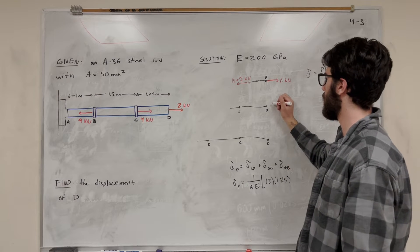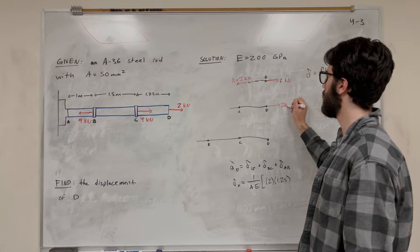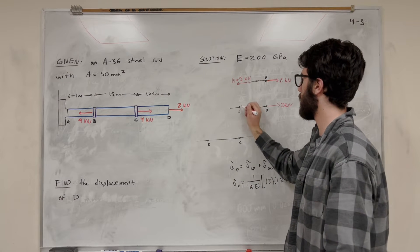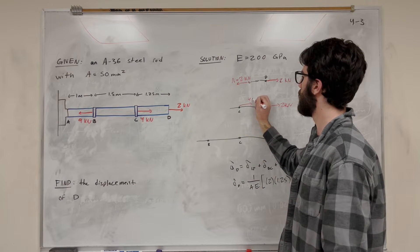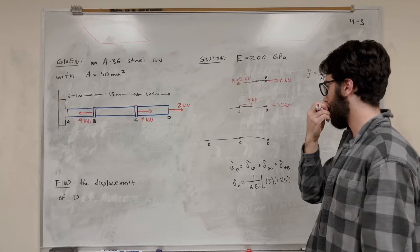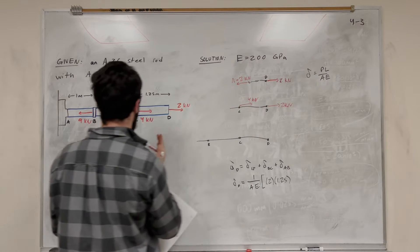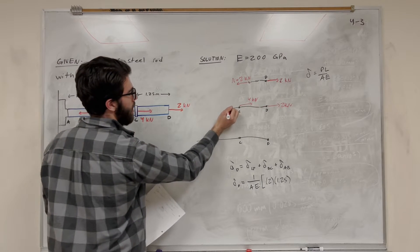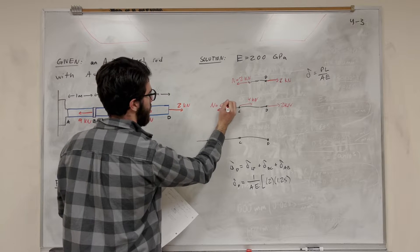So let's go to CD. So we know that we have that 2 kilonewtons here. And then also at C, we have that 4 kilonewtons. So our normal force, if we take a cut between B and C anywhere, it's going to be the same. The normal force is going to have to be equal to 6 kilonewtons.